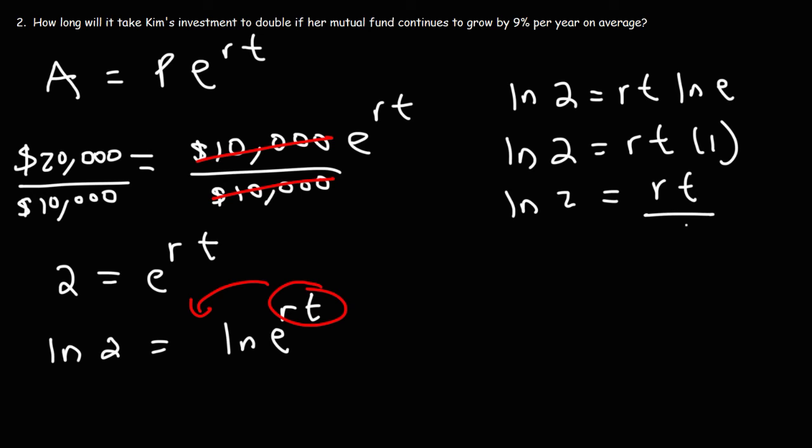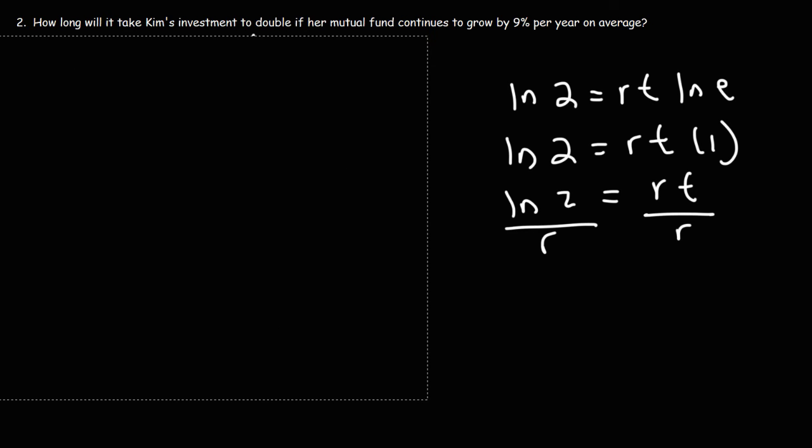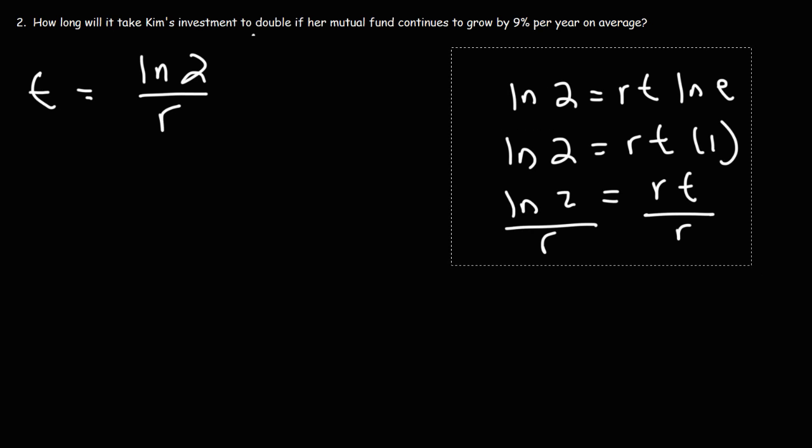To get T by itself, we need to divide both sides by R. So for this type of situation where the interest is compounded continuously, the time it takes to double the investment is going to be the natural log of 2 divided by the interest rate R as a decimal.